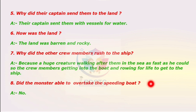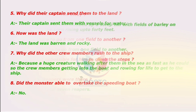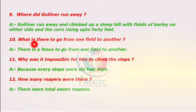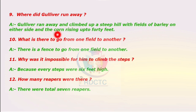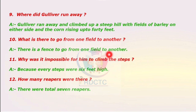Did the monster overtake the speeding boat? No. Where did Gulliver run away? Gulliver ran away and climbed up a steep hill with fields of barley on either side and the corn rising up to 40 feet. What is there to go from one field to another? There is a fence to go from one field to another. Why was it impossible for him to climb the steps? Because every step was 6 feet high.